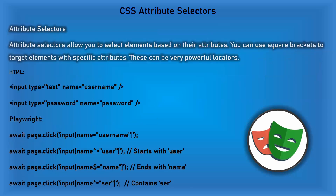For attribute selectors, you have input tags with type text, type password, and different attributes like name. You use the tag name followed by square brackets with the attribute name and its value. You can also use different combinations: starts with using the caret symbol, ends with using the dollar symbol, or contains using the asterisk symbol. These are the basic CSS attribute selectors.